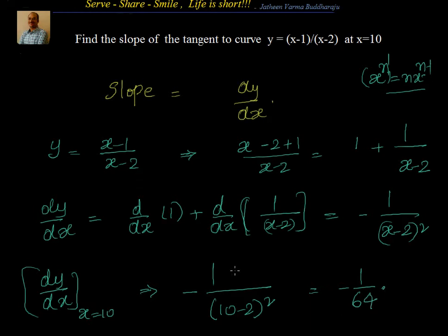So that's how we can find out the slope of the tangent to the curve. Understand that whenever we know the function y and find dy by dx at a particular point, it is the slope of the tangent to the curve at that particular point. Let's try to do one more example.